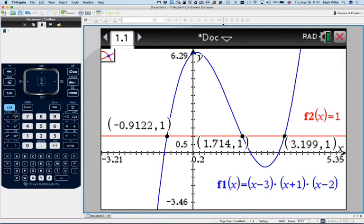You can see straight away we've now got the three points of intersection have come up straight away. So you don't have to repeat how to do it. You've got minus 0.9122, 1, then 1.714, 1, and 3.199, 1.